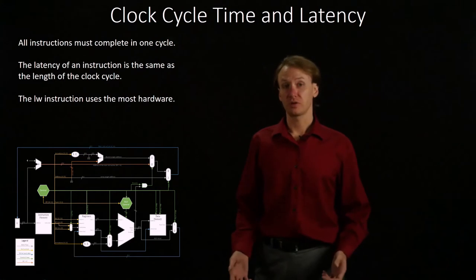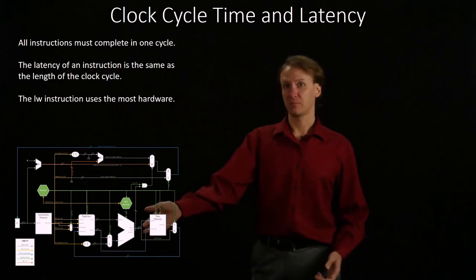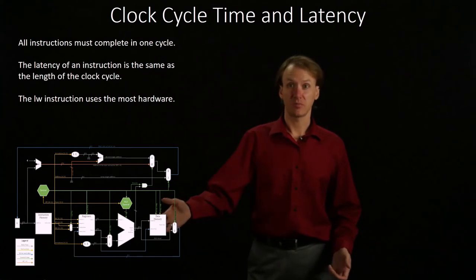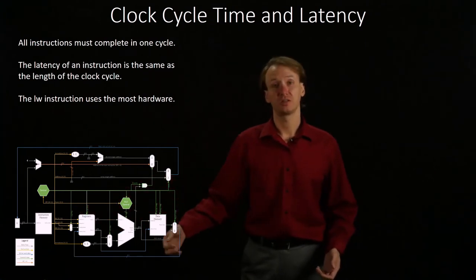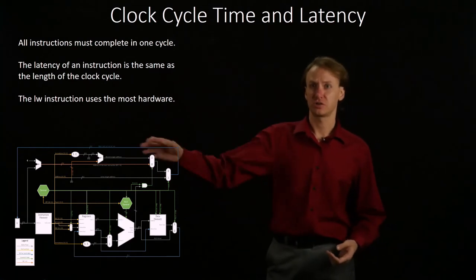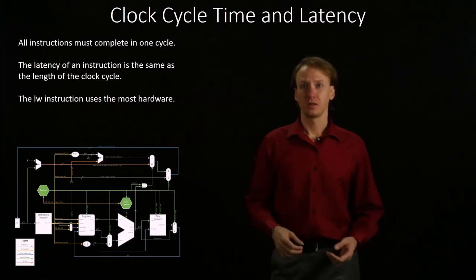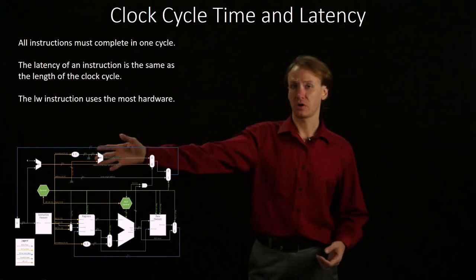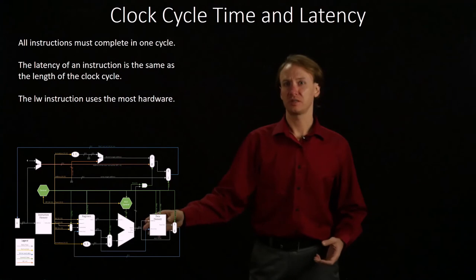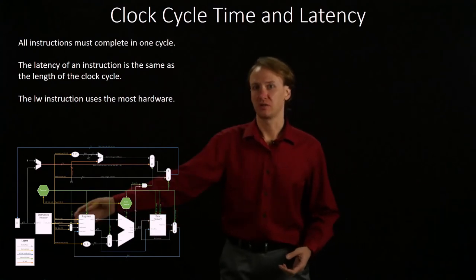If we look at our arithmetic instructions, they'll leave out the data memory. If we look at our store word instruction, it gets the data memory, but it doesn't write anything back to the registers. Those branch and jump instructions are just a whole lot cheaper. Even though they use some of this hardware up here, the branch and jump instructions are not going to be nearly as expensive as accessing memory and the registers again.